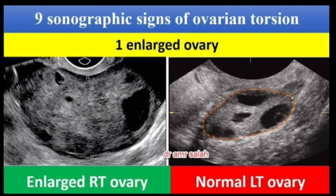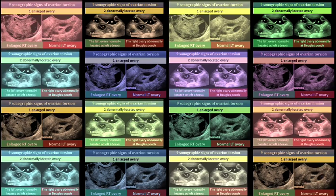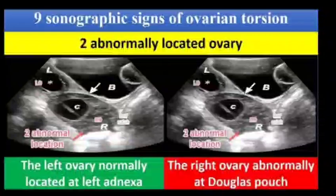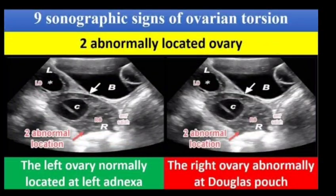Sign number 1: Enlarged ovary. The normal left ovary is shown, but the right ovary is enlarged. Sign number 2: Abnormally located ovary. The left ovary is normally located at the left adnexa, whereas the right ovary is abnormally located at the pouch of Douglas.